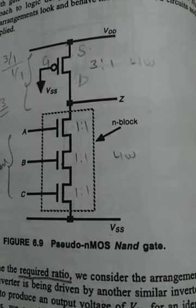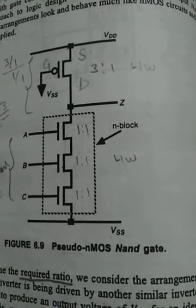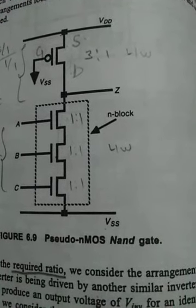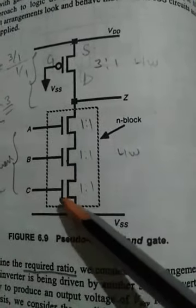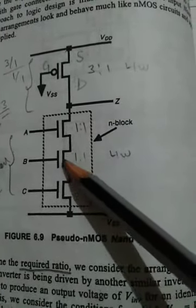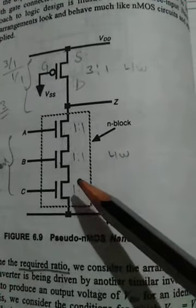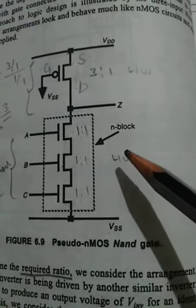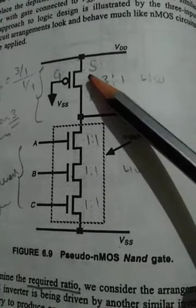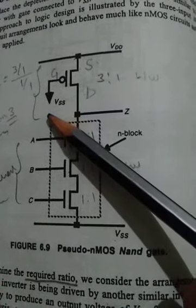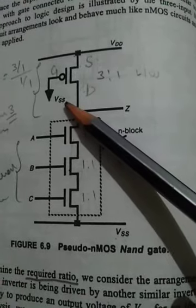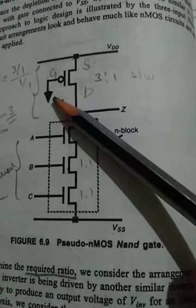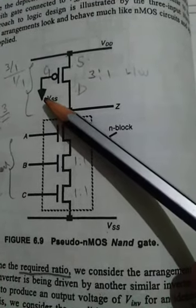From the figure, we are designing a three-input NAND gate using pseudo NMOS logic. The PMOS gate is connected to VSS, so the PMOS can be either in the saturation or active region. The status of the NMOS in the pull-down network depends on the state of the inputs.